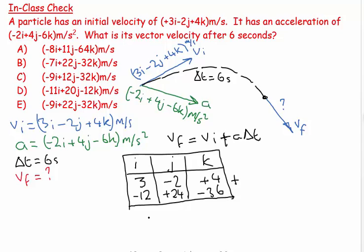And I have 3 added to minus 12 is minus 9i. Let's do the next one: 24 minus 2 is plus 22j. And then let's do the third one: 4 minus 36 is minus 32k.